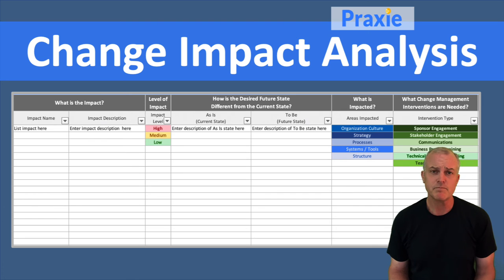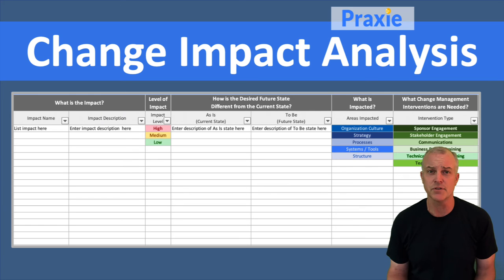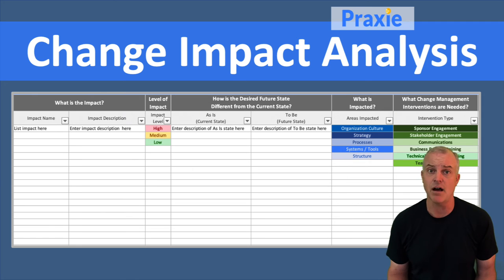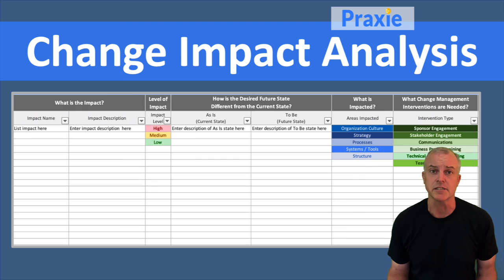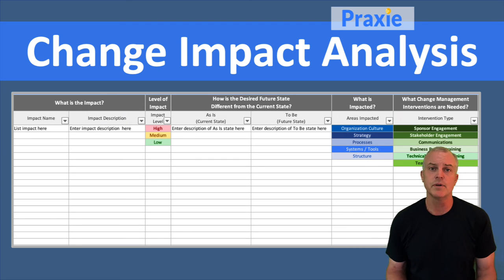Ideally, you also look at and relatively rank the level or scale of those impacts. If a stakeholder group has a very high impact, you want to put more attention and support on them so they can adopt the change successfully. Whereas if a stakeholder group has a much lower impact, providing some communication might be enough.